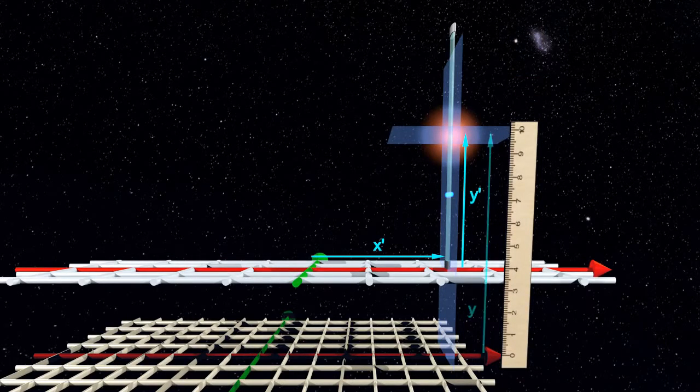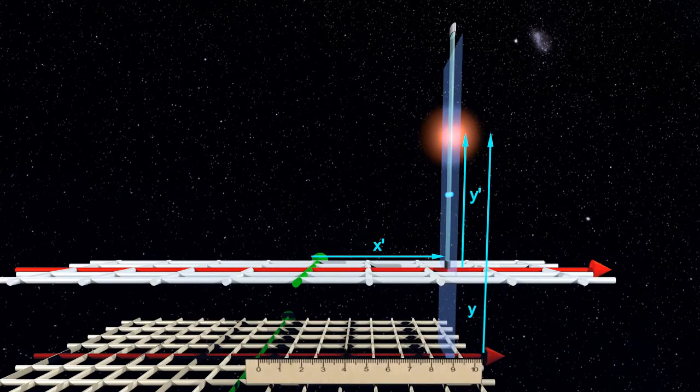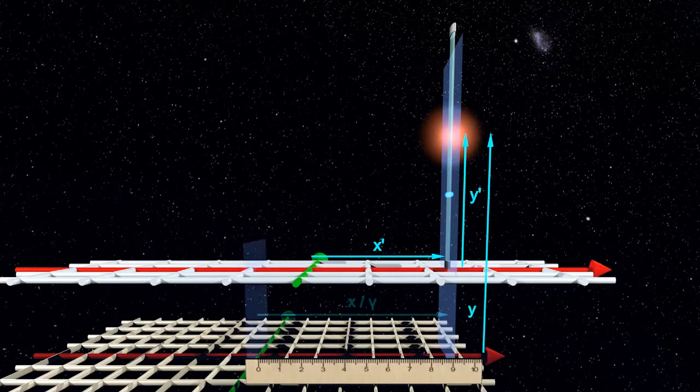Coordinates perpendicular to the relative displacement of the two frames do not change, aside perhaps from constant displacements. But the coordinate along the relative frame displacement appears length contracted.